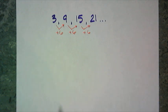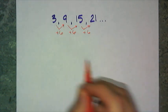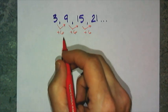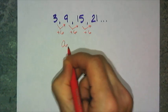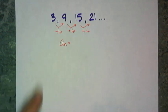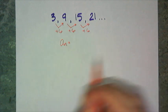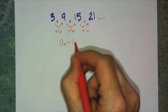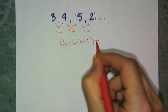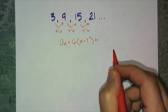And our rules for linear patterns, if you remember, we would do something like a sub n equals that 6 times n minus 1, and then you add your a sub 1.